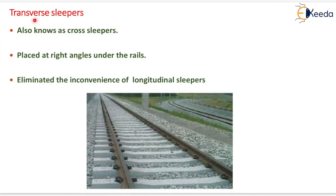Transverse sleepers, also known as cross sleepers, are placed at right angles under the rails. They eliminated the inconveniences of longitudinal sleepers.